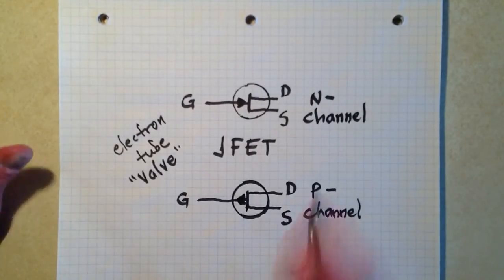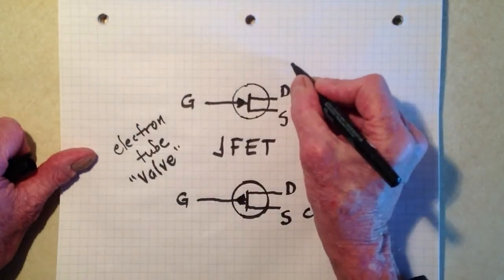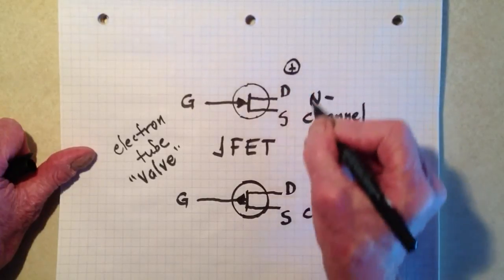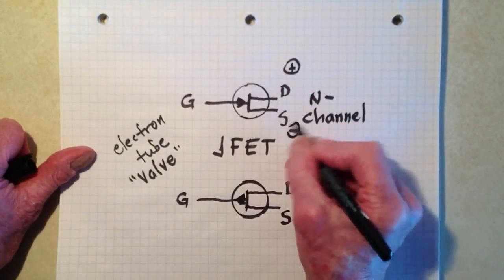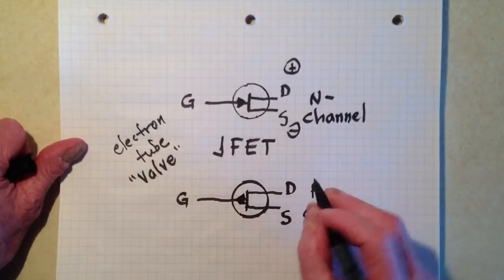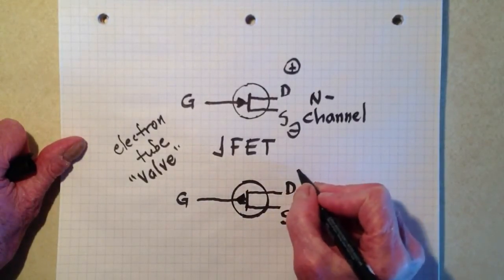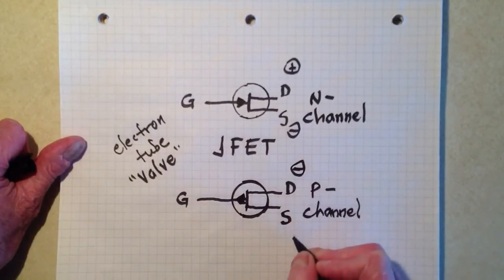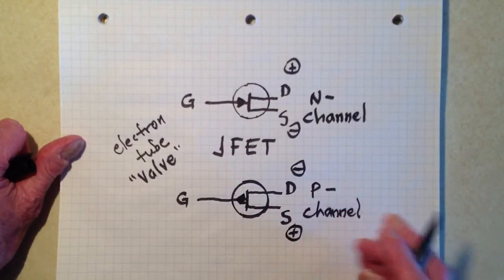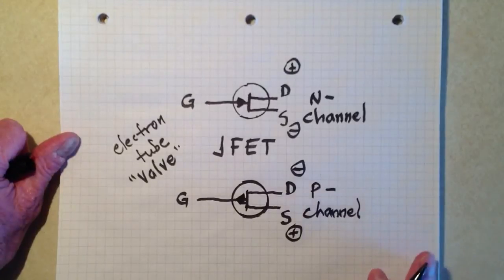But generally speaking, in the N-channel device, the drain is relatively positive with respect to the source, whereas in the P-channel device, the drain is relatively negative with respect to the source. So that is the fundamental difference there.